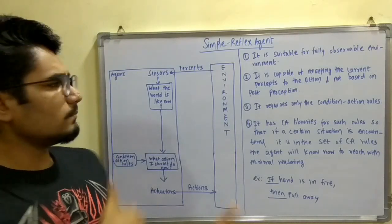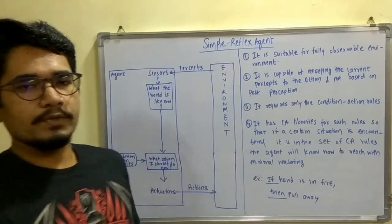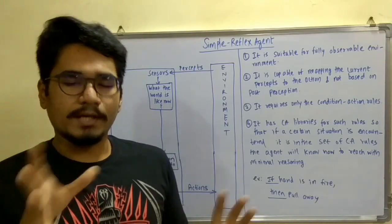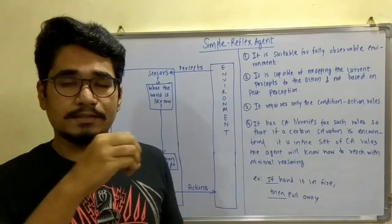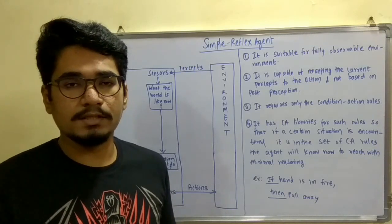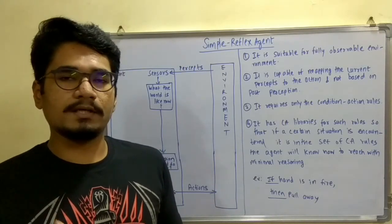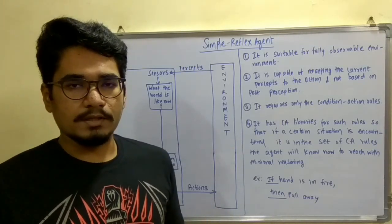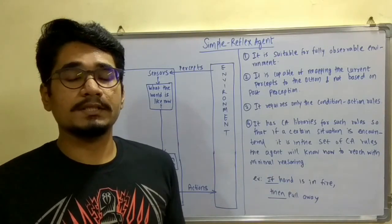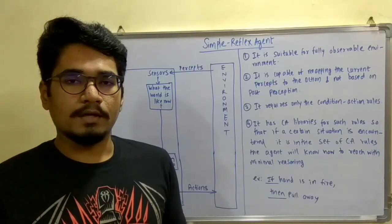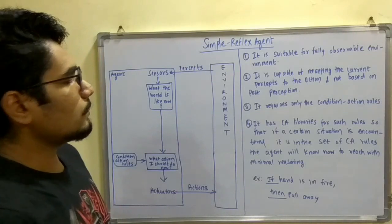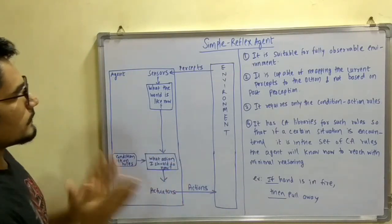So first of all, before moving on to this topic, let us discuss what is a rational agent. A rational agent is that particular agent which does the right thing or the right action at the right situation. It considers its input conditions as well as the surrounding conditions and then it acts appropriately. So first of all, let us move on to this diagram.